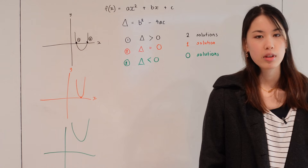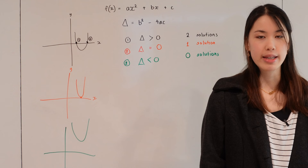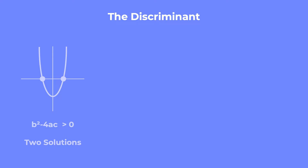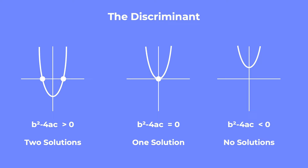To summarize the steps we take in order to calculate the discriminant: first, write the function in the form ax² + bx + c if it isn't yet in that form. Following this, identify the values of a, b, and c from the function. Then conclude the number of solutions to f(x) = 0 by identifying whether the discriminant is greater than zero — two distinct solutions — equal to zero — one solution — or less than zero — no real solutions.